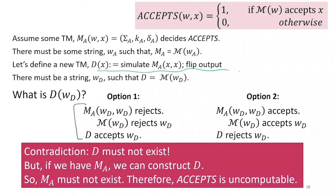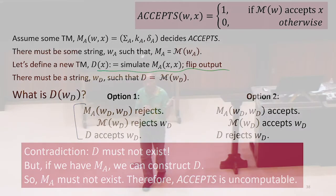But if MA exists, then we can definitely construct D. There's no question that we know how to use Turing machines in a way that would allow us to construct D from MA. So that means if D does not exist, then MA must not exist. Because if we had MA, we could construct D. But we know D doesn't exist.